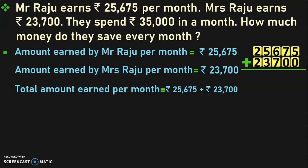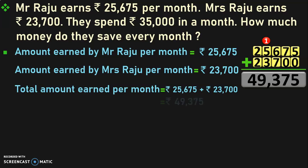Let us add these two numbers now. 5 plus 0 is 5. 7 plus 0 is 7. 6 plus 7 is 13 — write 3 and carry over 1. 1 plus 5 is 6, and 6 plus 3 is 9. 2 plus 2 is 4. So, the answer is 49,375, which is the total amount earned by Mr. and Mrs. Raju per month.